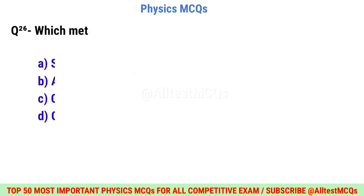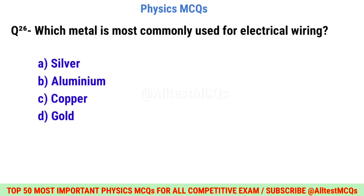Question number twenty-six: Which metal is most commonly used for electrical wiring? Correct option is C: Copper.